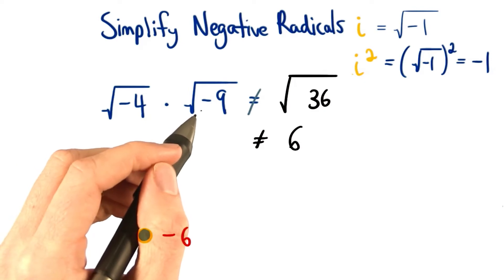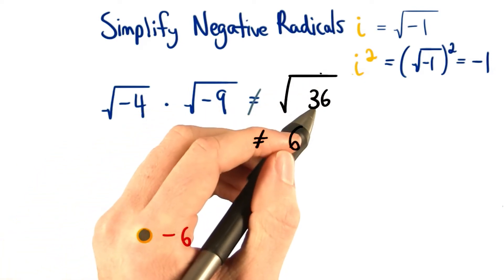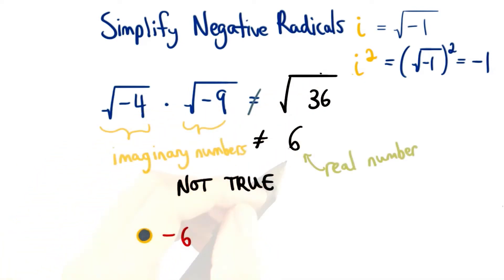You might have thought to multiply these together to get the square root of positive 36, which equals 6. But we know that's not true since 6 is a real number, and these two are imaginary numbers.